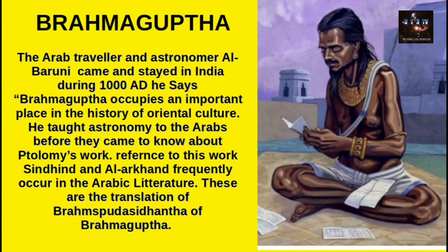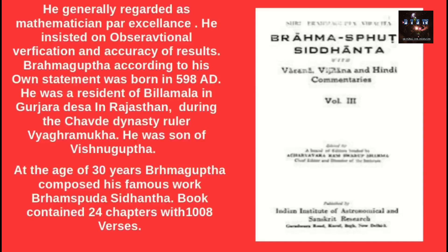The Arab traveller and astronomer Al-Biruni, whose name almost all Indians will have heard, came to India and stayed during 1080 AD. He says Brahmagupta occupies an important place in the history of Oriental culture. He taught astronomy to Arabs before they came to know about it. References to his works Sindh Hind and Al-Arkhand frequently occur in Arabic literature — these are translations of the Brahmasphutasiddhanta of Brahmagupta. He is generally regarded as the mathematician par excellence.